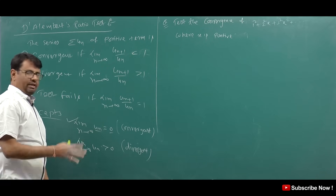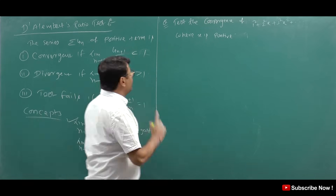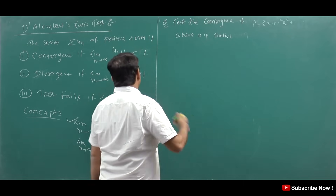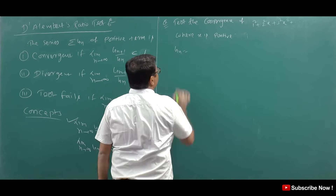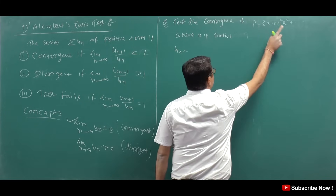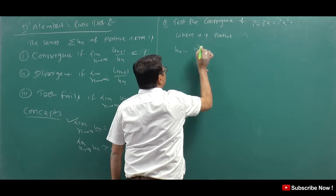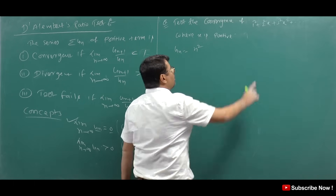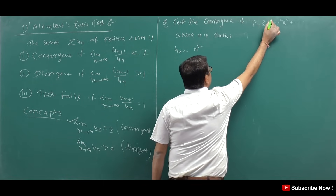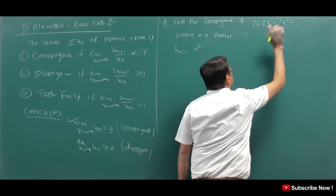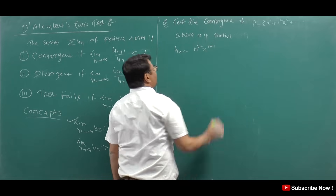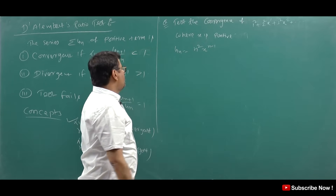Here we have to test the convergence of the series where x is positive. First of all, we will write u_n. So what is u_n? We have 1², 2², 3² — so our nth term will be n². And this is 2 to the power 1, here is 3 to the power 2, so here is n to the power n minus 1. So this is u_n.